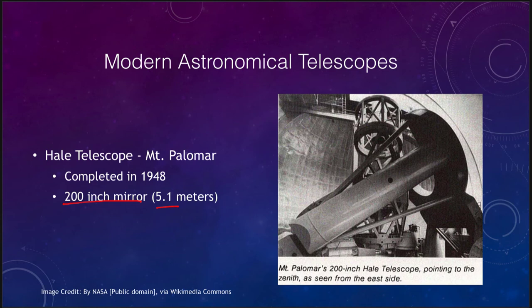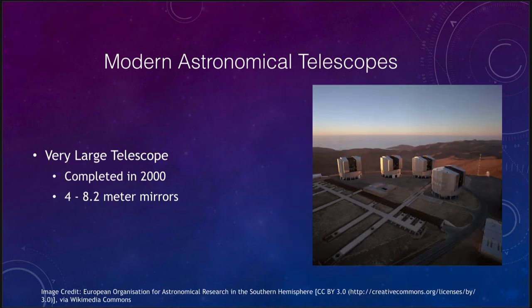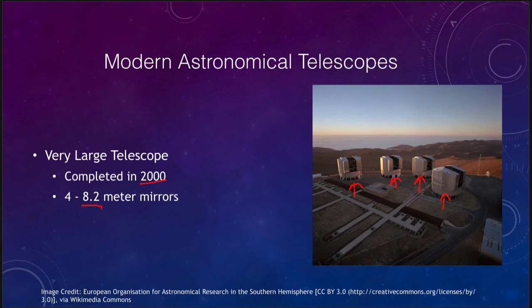Five meters is getting to be relatively modest now as we have ones that are much larger. We also have what we call the Very Large Telescope, completed in 2000, which has a set of four eight-meter mirrors. Each is in a separate dome, and this telescope is located in the southern hemisphere in Chile. The four telescopes can be used either together or individually to observe astronomical objects.